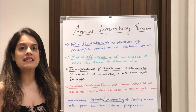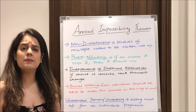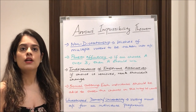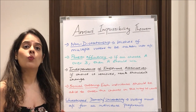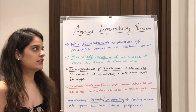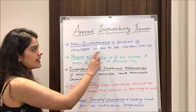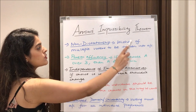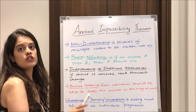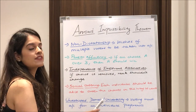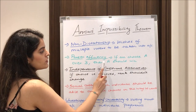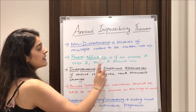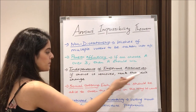Arrow stated that it is impossible to formulate a social ordering without violating at least one of these conditions: non-dictatorship — the wishes of multiple voters must be taken into account and not just one specific individual; and Pareto efficiency — if all voters choose A over B, then it is clear that A should win.